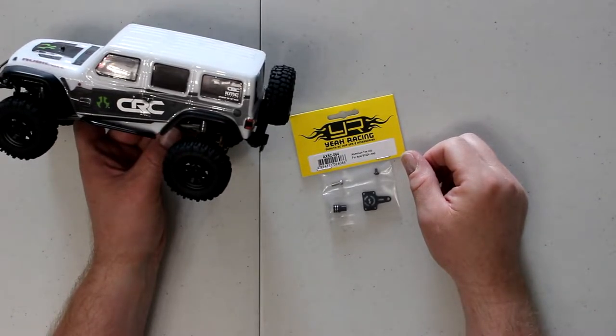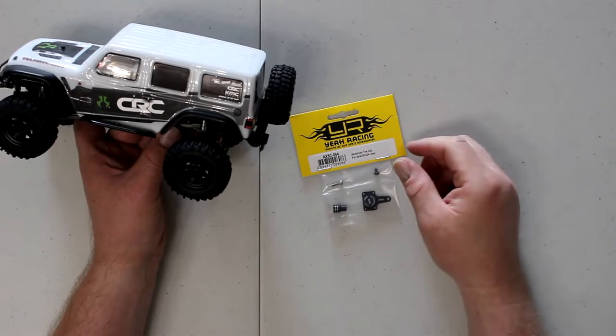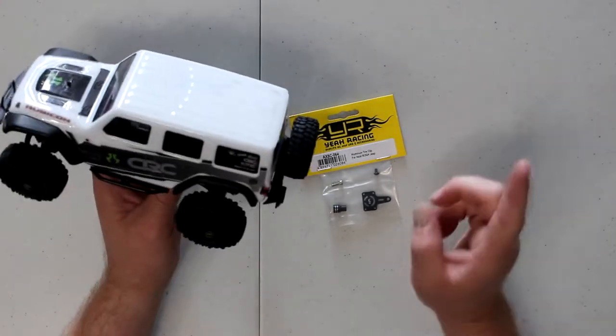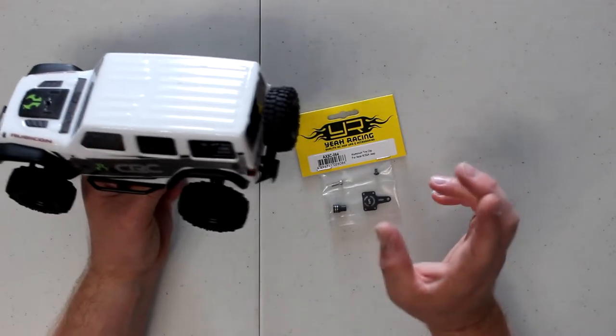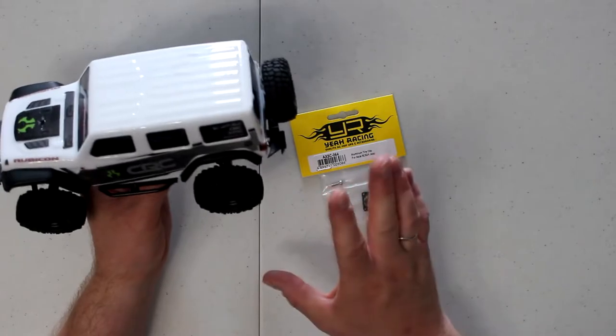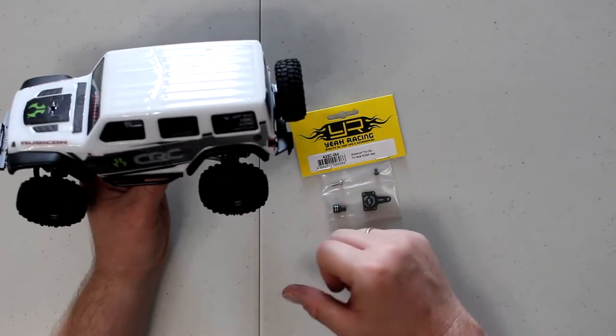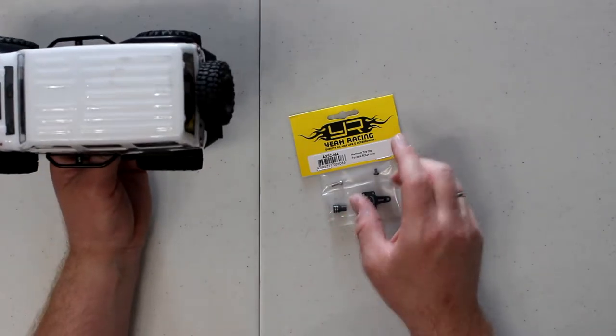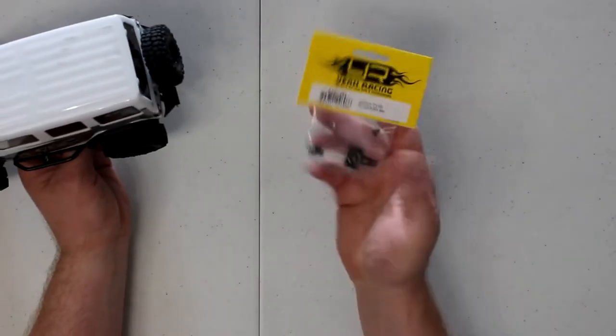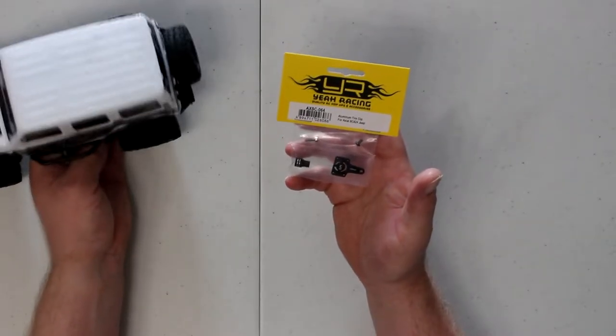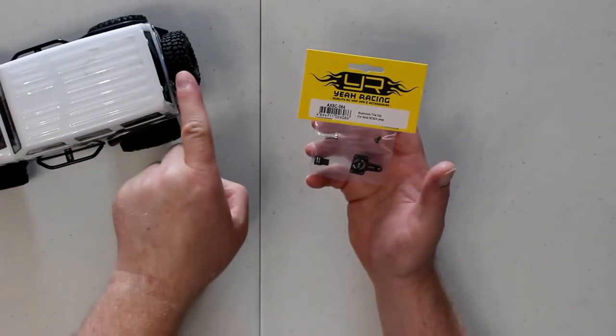Welcome to a new view by DJ's BRC. We have our SCX 24, this is the Jeep version. I do have some modifications I did on video for this guy here if you want to go watch them, check my videos. But today what I want to do is install this Yaw Racing aluminum tire clip, basically replaces the one I have in the back right here.